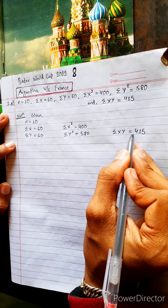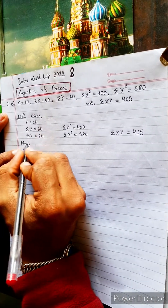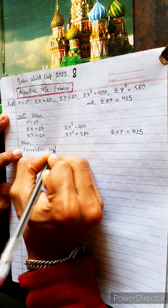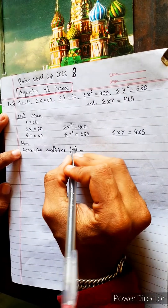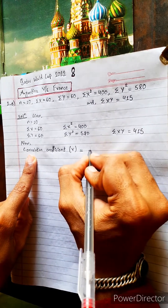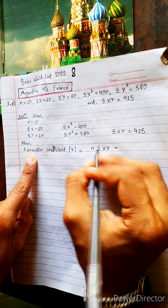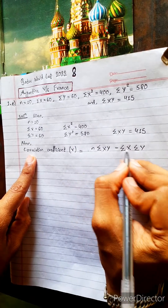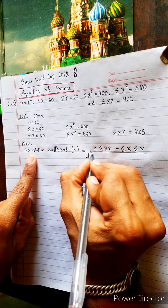Now, many things are given so we have to use one logic. The formula will also be long because many things are given. The question is asking for the correlation coefficient, so the formula will be very long. If you don't know the formula, look in the book or try to remember. Summation xy comes first: n times xy minus summation x times summation y.